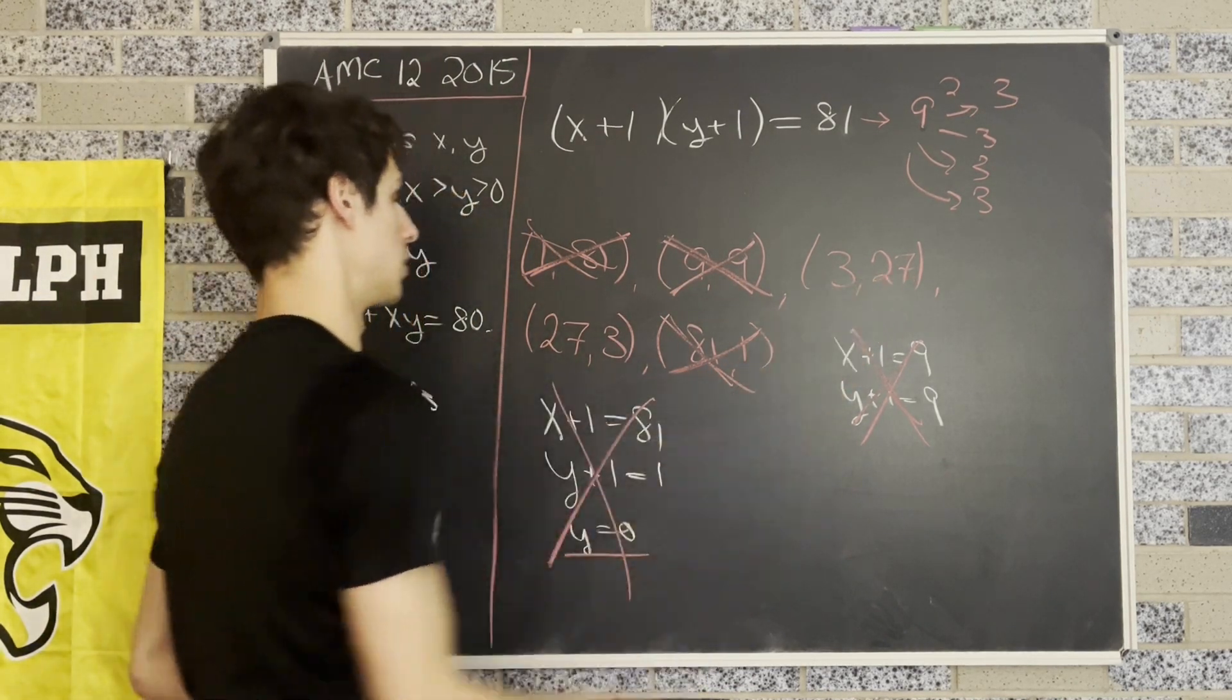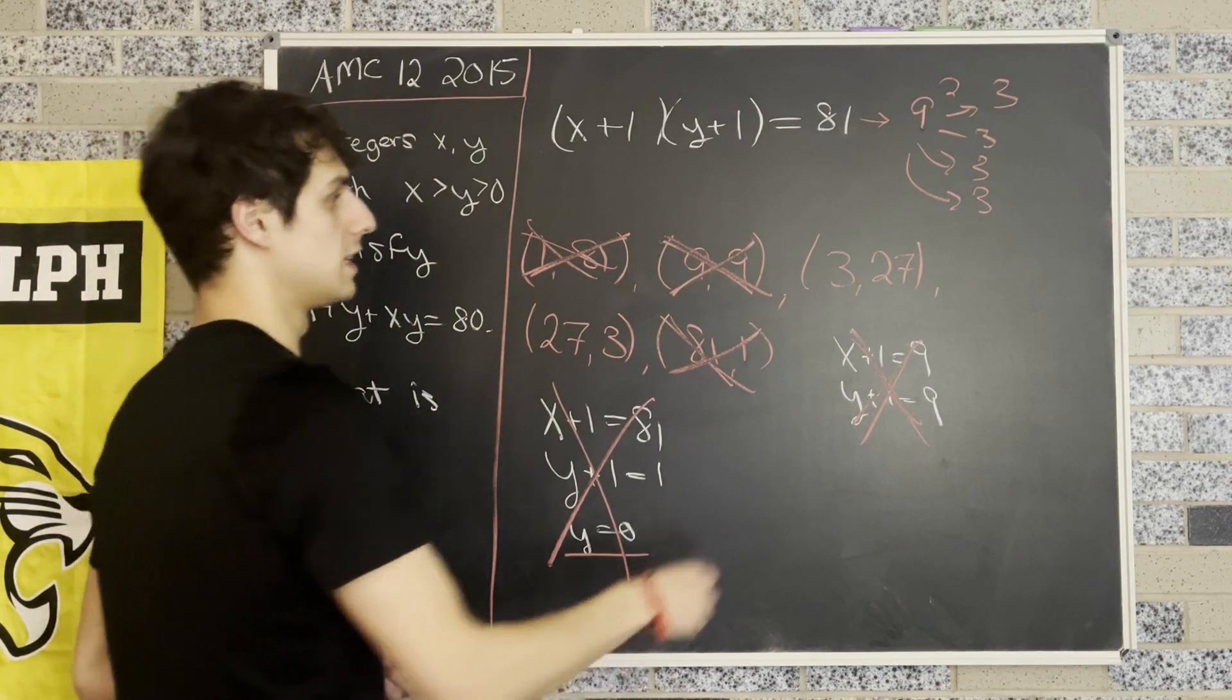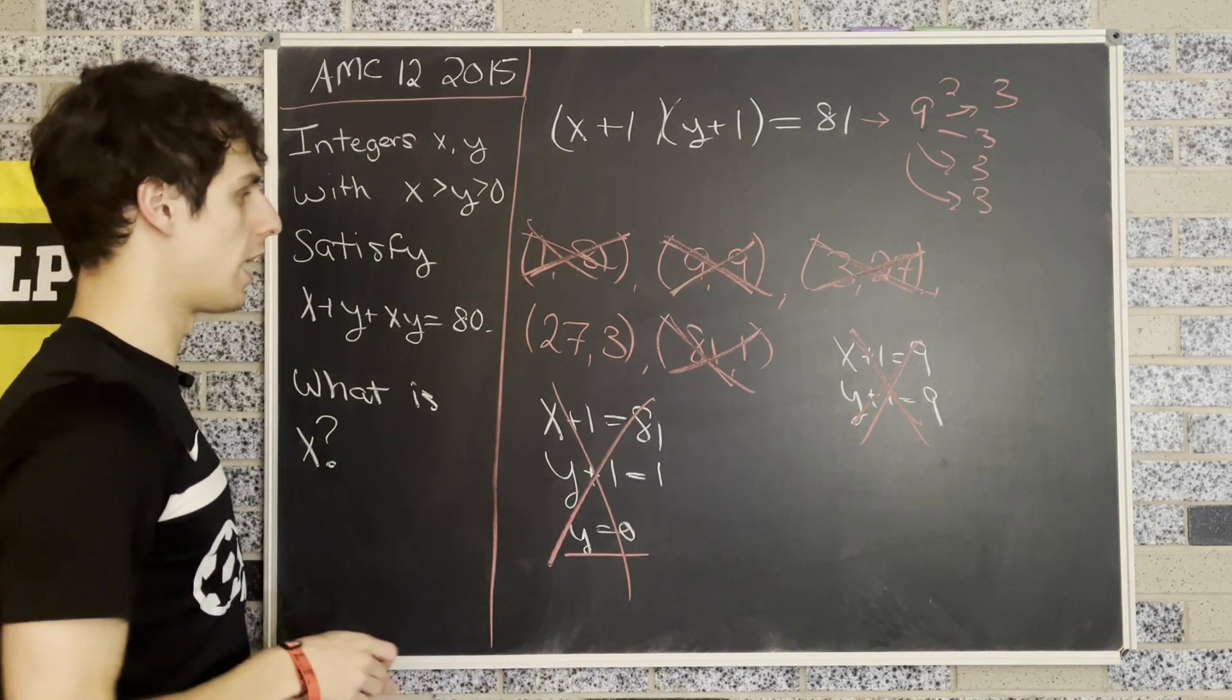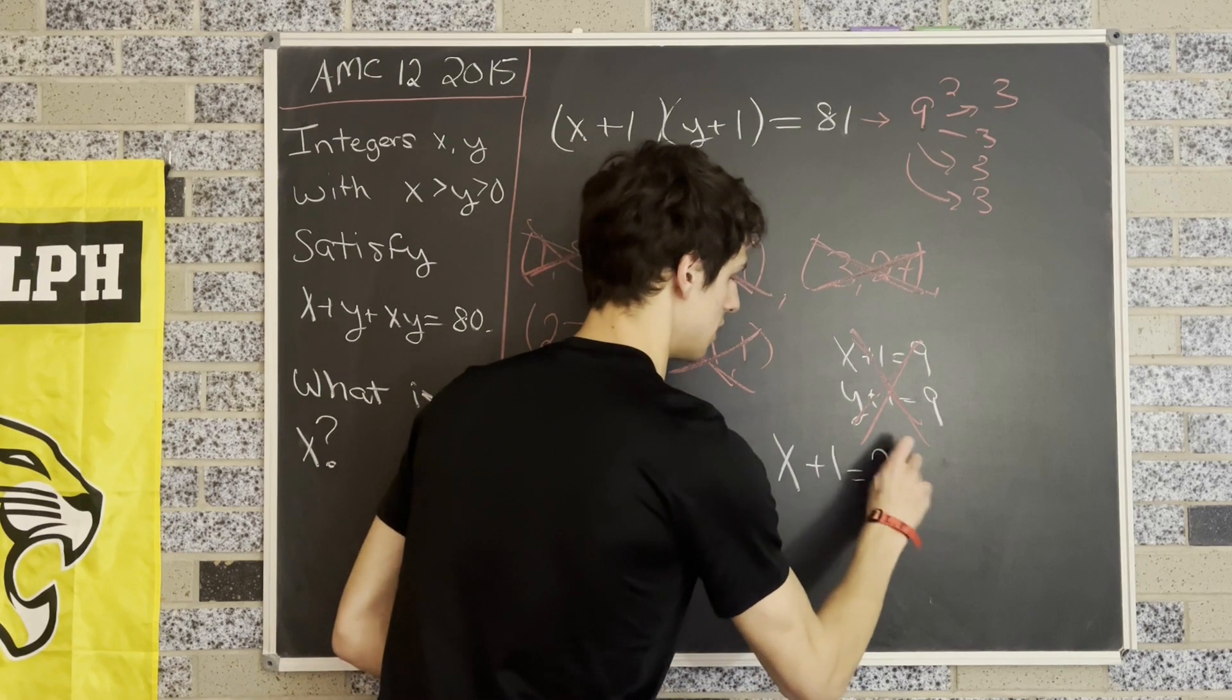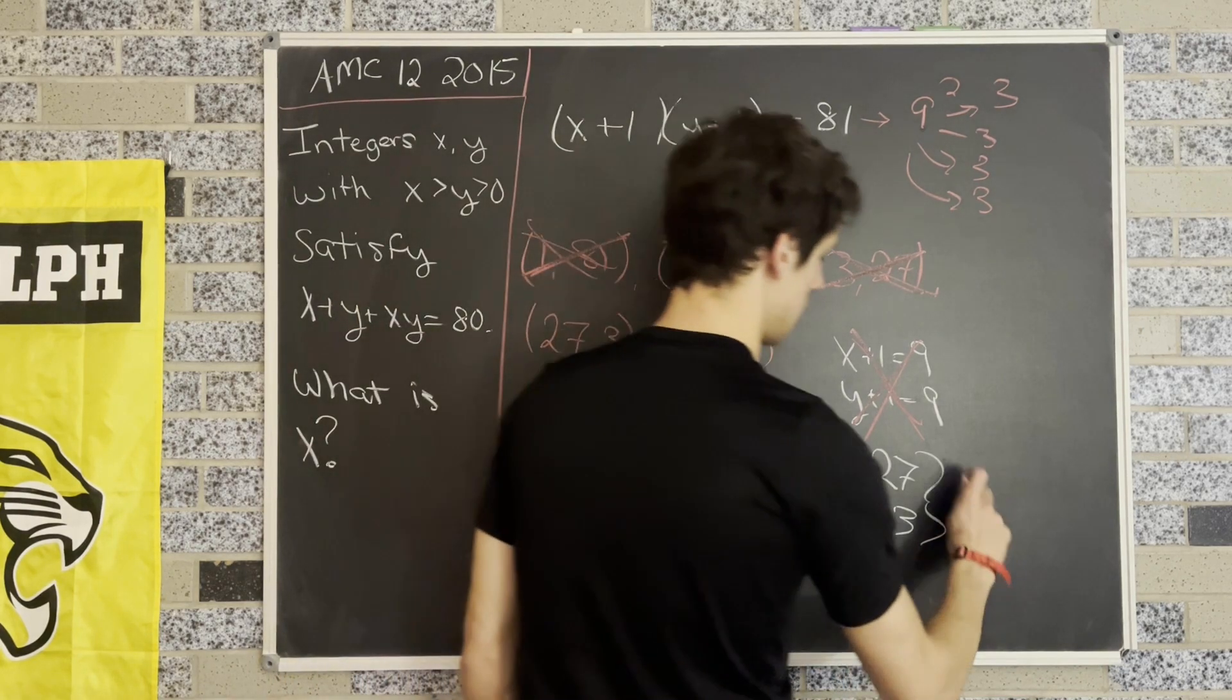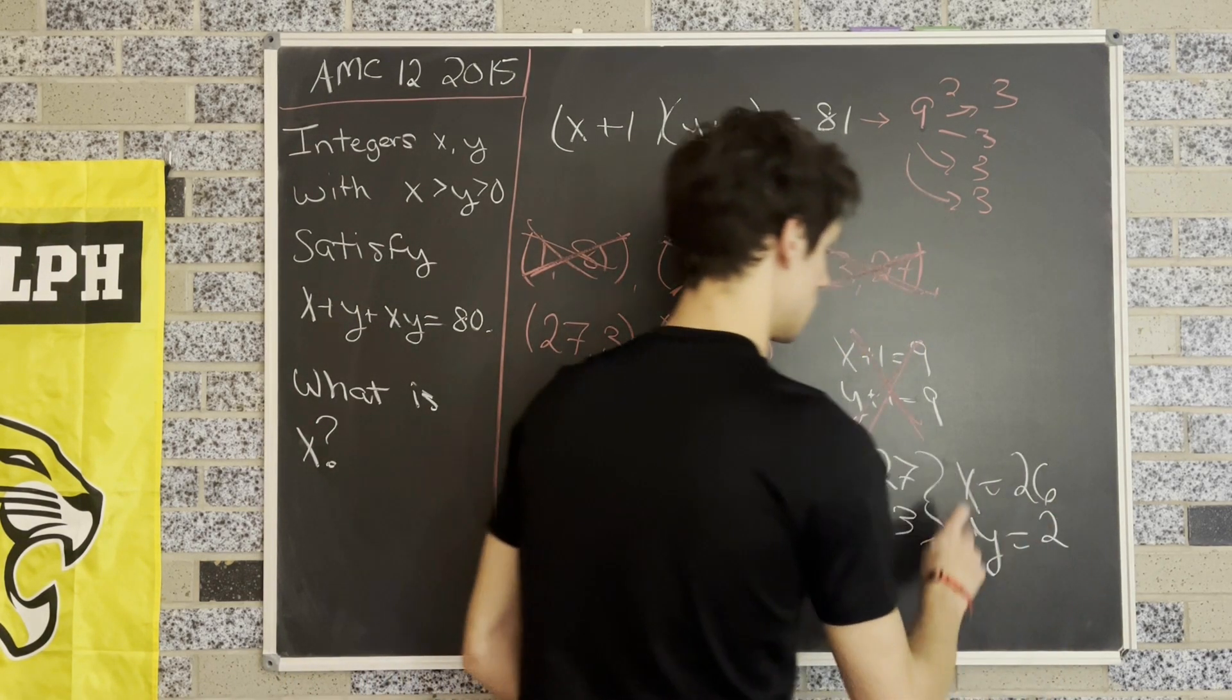So now we're only left with 3, 27, and 27, 3. And pretty clearly, we can see that this is not going to be the case either, because again, x has to be bigger than y. So we're left with x plus 1 is equal to 27, and y plus 1 is equal to 3. And that gives us the solution set x is equal to 26, and y is equal to 2.